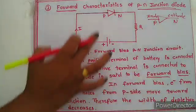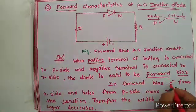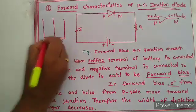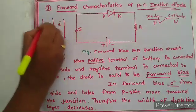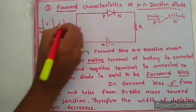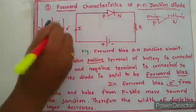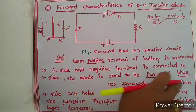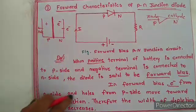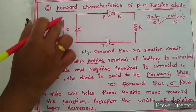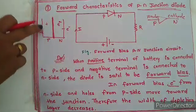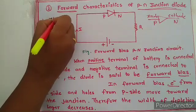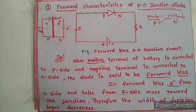In forward bias, electrons from the N side and holes from the P side move towards the junction. Here on the N side there are free electrons and on the P side there are holes, and there is the barrier potential. In forward bias, electrons from the N side and holes from the P side move towards the junction. Therefore, the width of the depletion layer decreases.